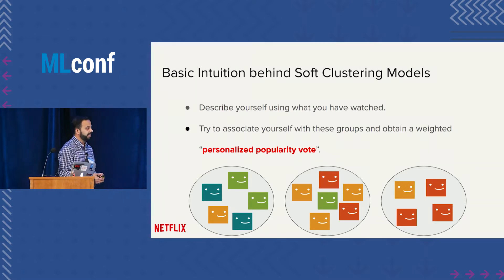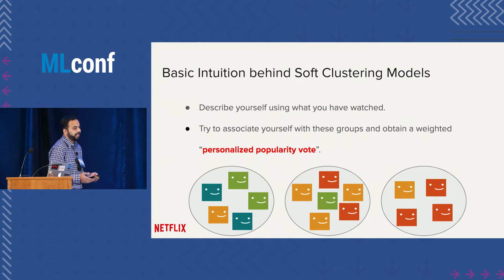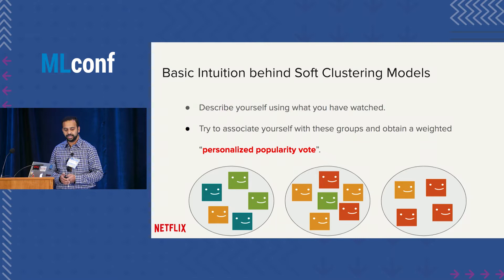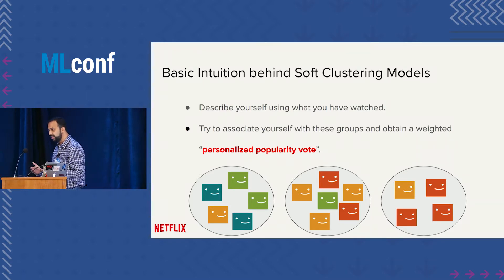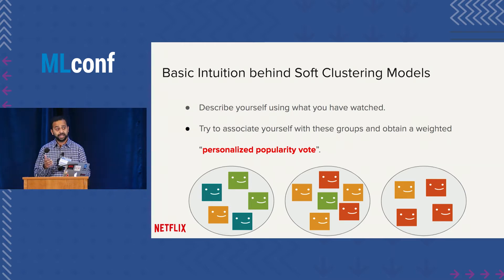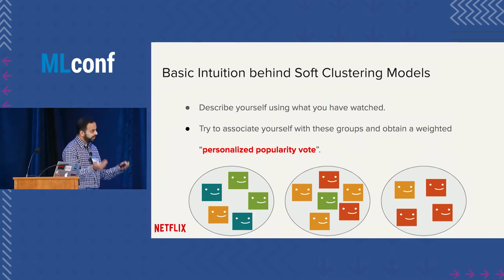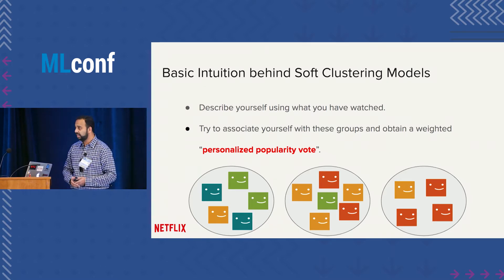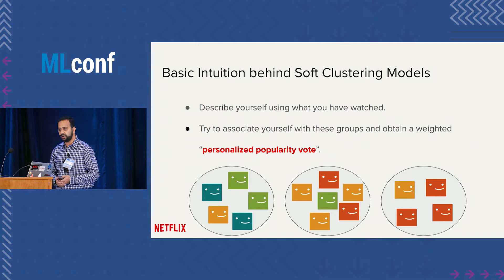The only difference between models is in the modeling capacity. Basic models such as matrix factorization or topic models have some basic assumptions about how to form these clusters and the propensity function to tell which video is relevant to a member. More sophisticated models such as deep learning have more advanced assumptions about how the data is structured.